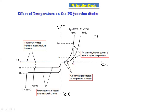From the reverse bias characteristics we can also say that reverse current increases as temperature increases. At 27°C the reverse current is at a lower level compared to the current at 227°C. So if we increase the temperature, the reverse current also increases. The current at 27°C is lower and the current at 227°C is higher.